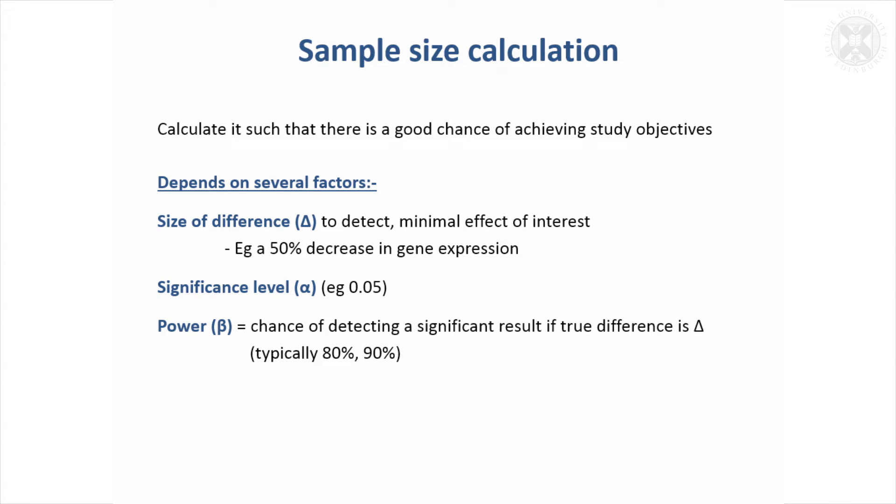The next concept, which is specific to sample size calculation, is the power that's often denoted by the Greek symbol beta. The power is the chance of detecting a statistically significant result if you've got this size of difference. So if the true underlying decrease in gene expression, for example, was 50%, and I do my study with this many animals, how likely am I to be able to get a significant result?